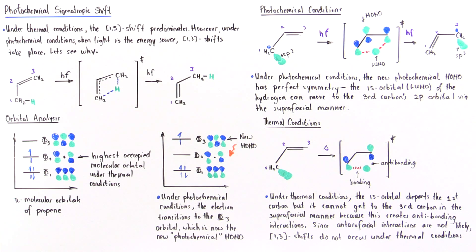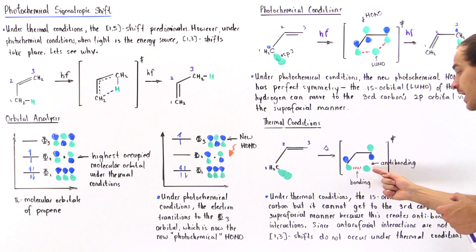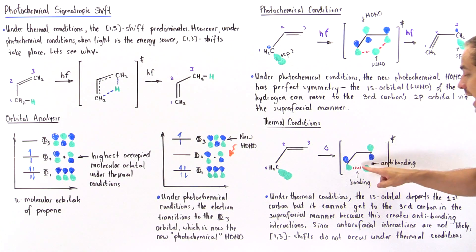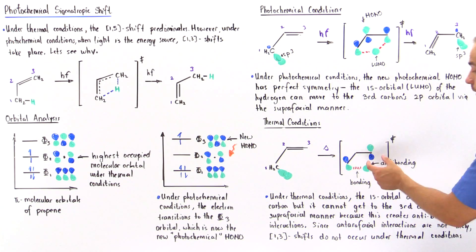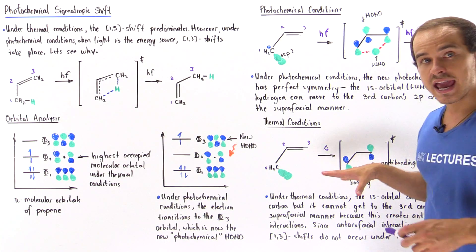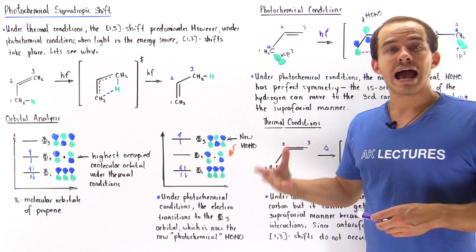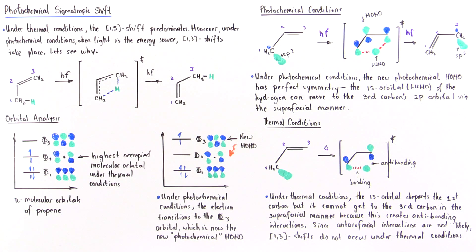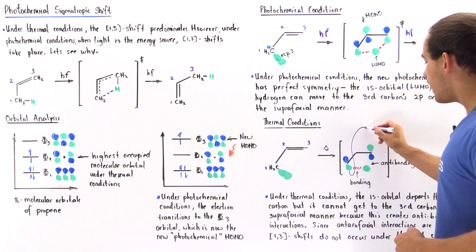So when our 1s orbital basically reaches the midpoint section, we'll have a partially broken bond — a poor overlap here — and we'll have an anti-bonding overlap here, because we have a green (positive wave function) and a blue (negative wave function). That creates a destabilizing anti-bonding interaction. So under thermal conditions, the suprafacial interaction cannot actually take place.